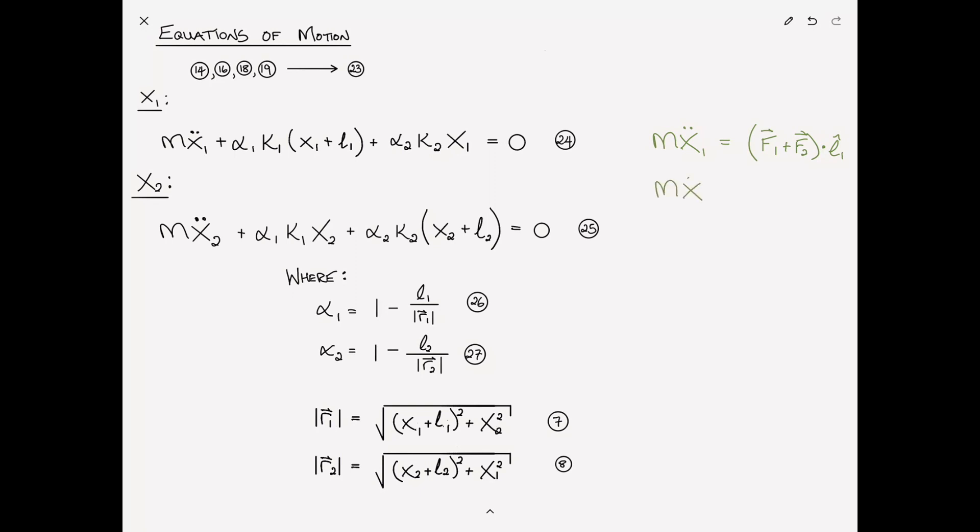And similarly, MX2 double dot is equal to, again, the sum of the forces, F1 plus F2. Just add them in the vector sense. And now we just dot them in the E2 direction. And I'm going to suggest to you that you can let the computer do all the math here.